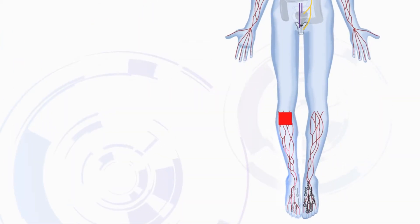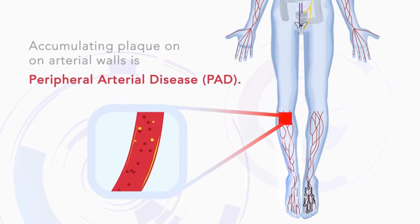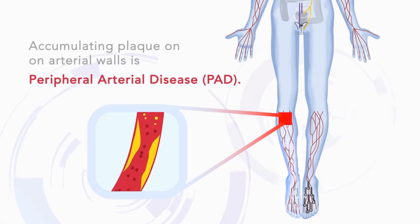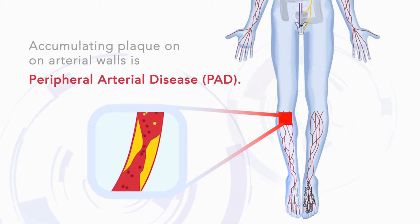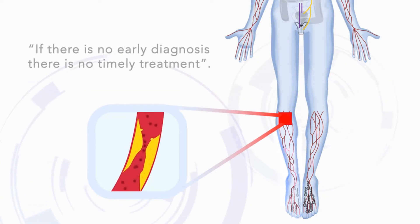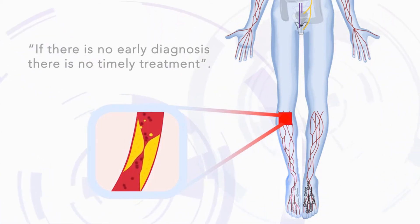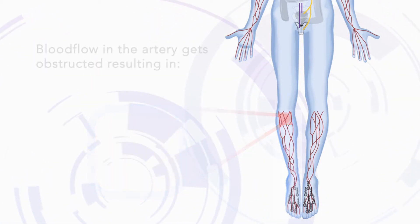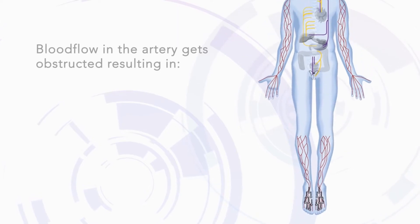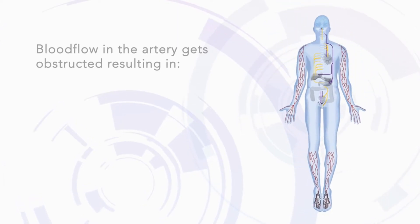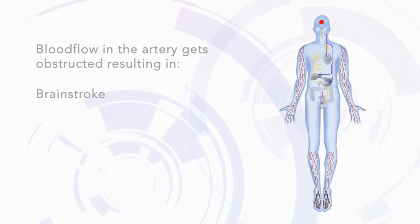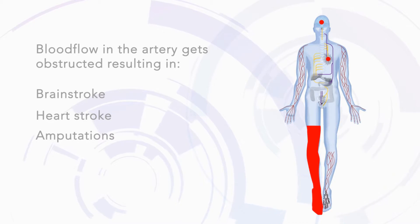Peripheral arterial disease involves accumulating plaque on arterial walls, also known as PAD. If there is no early diagnosis, there is no timely treatment. Blood flow in the arteries gets obstructed, resulting in brain stroke, heart stroke, amputations, and ulcerations.